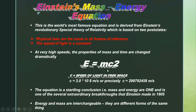In the equation E = mc², c is the speed of light in free space and its value is 3 × 10⁸ meters per second, or precisely 299,792,458 meters per second. The equation is a startling conclusion that mass and energy are one, and is one of several extraordinary breakthroughs that Einstein made in 1905.